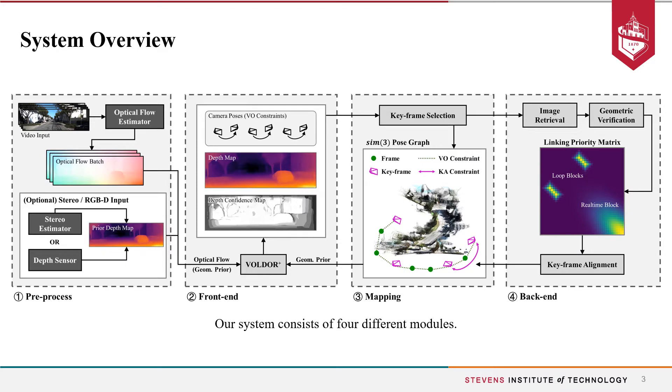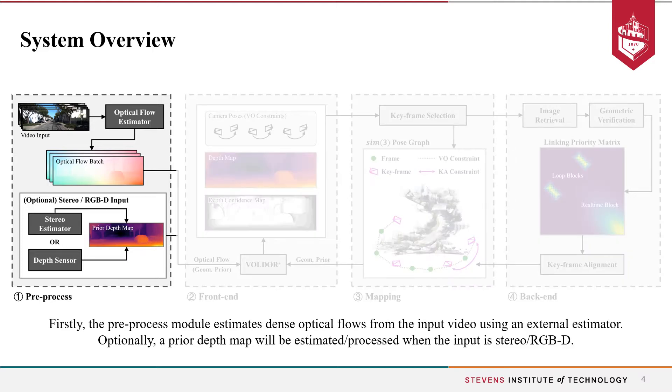The overall workflow of our system consists of four modules. First is the pre-process module, which estimates dense optical flows from the input video using an external estimator. Optionally, a prior depth map is estimated or processed when the input is from a stereo camera or depth sensor.